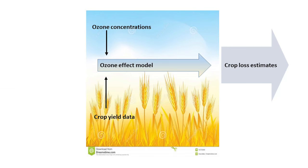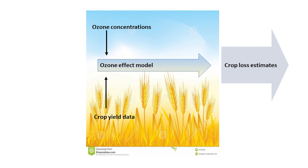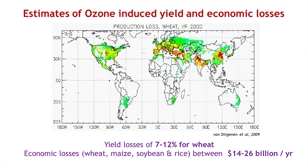So in the past people have used dose-response relationships to estimate yield losses across wider spatial regions. If they have crop production data, then they will combine those yield losses with that crop production data to give a production loss. And then they've tended to just use world market price to work out how that production loss equates to some kind of economic loss. That's sort of okay if you're working on a global scale.